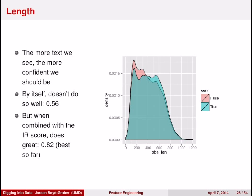One thing that I thought at least would help more was the amount of text that we've seen in the question. One would think that the more text you see, the more confident we should be about the answers that we're giving. By itself, it doesn't do very well. It only gives you a marginal improvement over the baseline. But if you combine it with the IR system score, it does great, giving us a score of 0.82, the best performance that we've had so far.